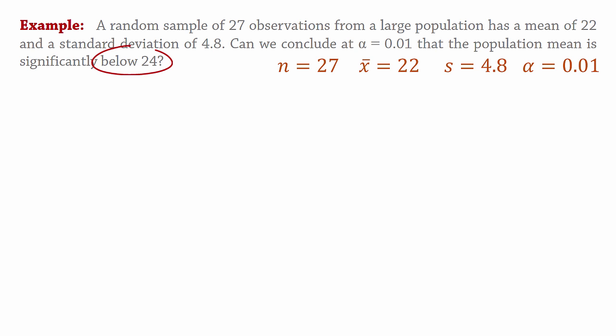Since we're testing if the population mean is below 24, the alternative hypothesis would be that the population mean is less than 24. The null hypothesis would be that the population mean is greater than or equal to 24.